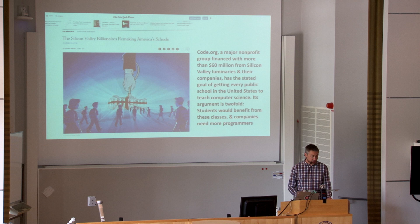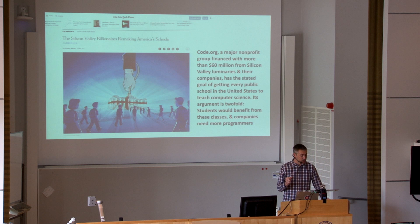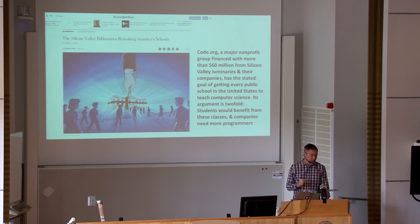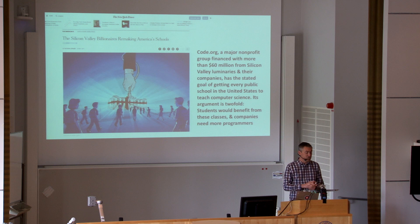One such effort, according to the New York Times, is the learning-to-code organization Code.org — a major non-profit group financed with more than $60 million from Silicon Valley companies, which has the stated goal of getting every public school in the United States to teach computer science. Its argument is twofold: students would benefit from these classes, and companies need more programmers. And it's not just in Silicon Valley that this enthusiasm for teaching children to rule the machines has taken hold — across the world, children are being told that they must learn to code.